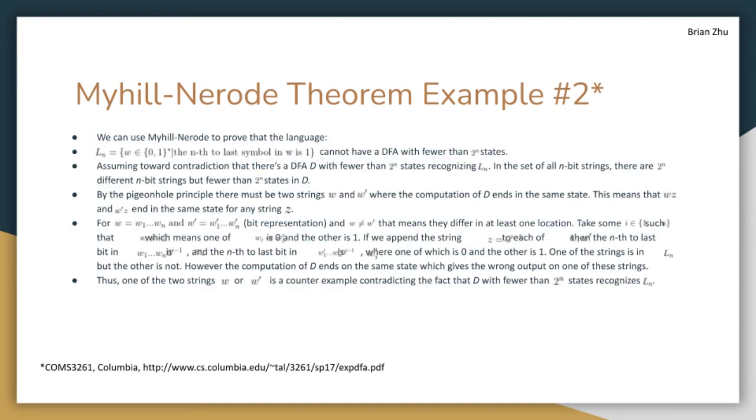We can also use Myhill-Nerode to prove that the language L_n of all bit strings, where the nth to last symbol is 1, cannot have a DFA with fewer than 2^n states. With a proof by contradiction that assuming there is a DFA D with fewer than 2^n states that recognizes L_n, we can proceed with the proof. In the set of all n bit strings, there are 2^n different n bit strings, but fewer than 2^n states in D. That's our assumption.